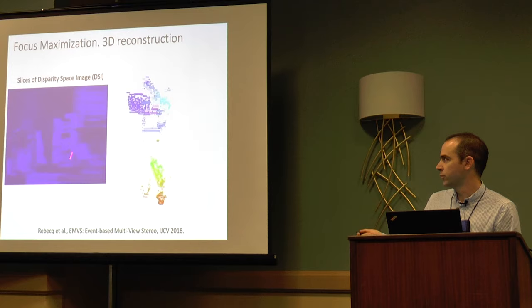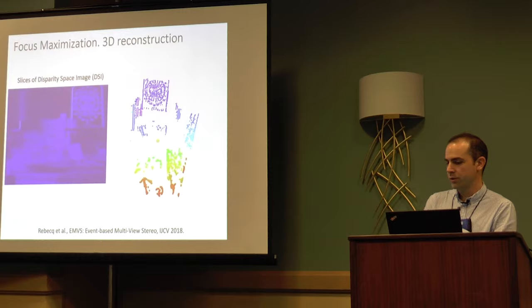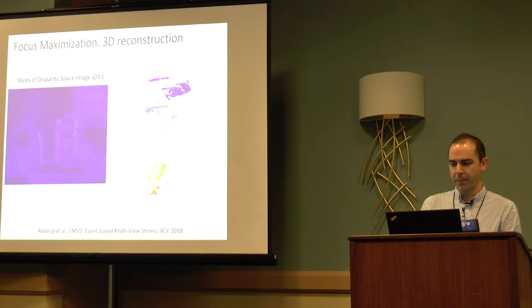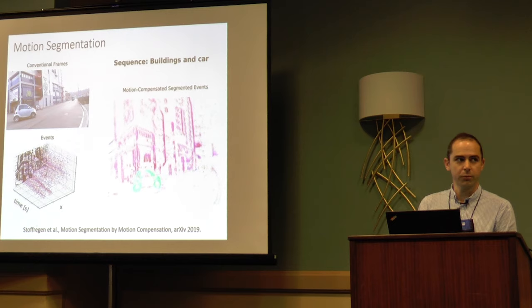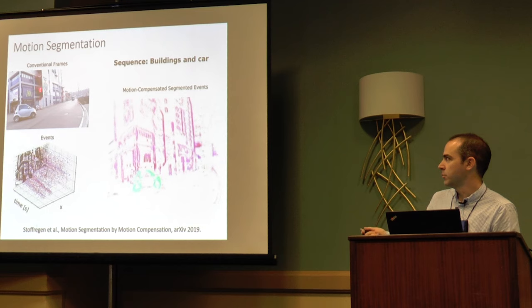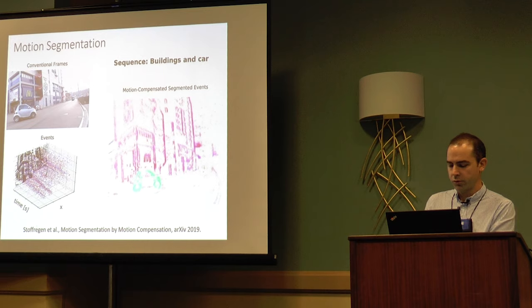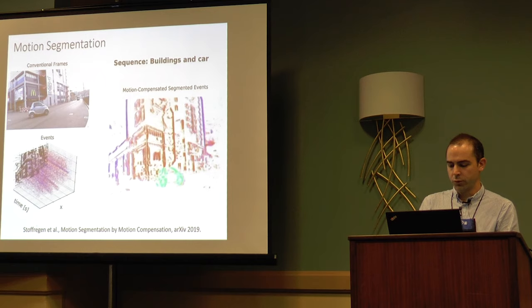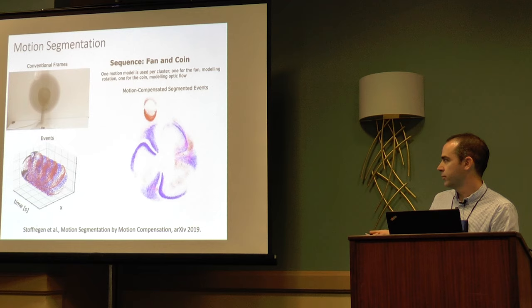This framework has different applications. One is 3D reconstruction - you can clearly see the focusing effect: on the left are warped event images according to different depths, and on the right is the extracted semi-dense 3D reconstruction. It can also be used for motion segmentation, in work with Timo here in Australia. On the top left is the image from the standard camera, on the bottom left the input events, and on the right are motion-compensated images with different colors for different moving objects. Due to the high-speed capabilities of the sensor, we can even do segmentation of a coin dropped in front of a fan.